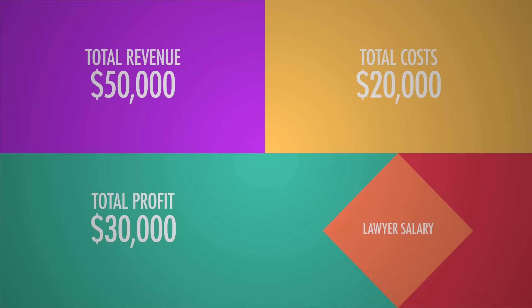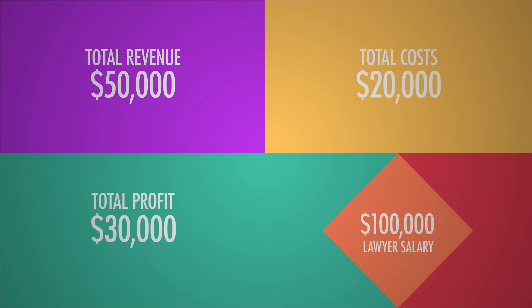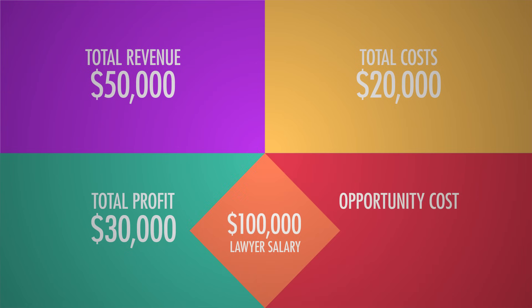Our pizza entrepreneur loses income he would have earned by being a lawyer — let's say $100,000. If you factor that in, he's actually losing $70,000. But he's his own boss. He might be happier running a pizza shop even though he's making less money. The point is you have to factor in these implicit benefits and costs when you make decisions.